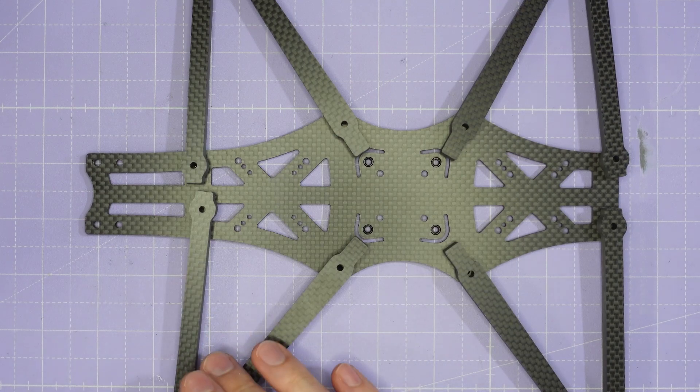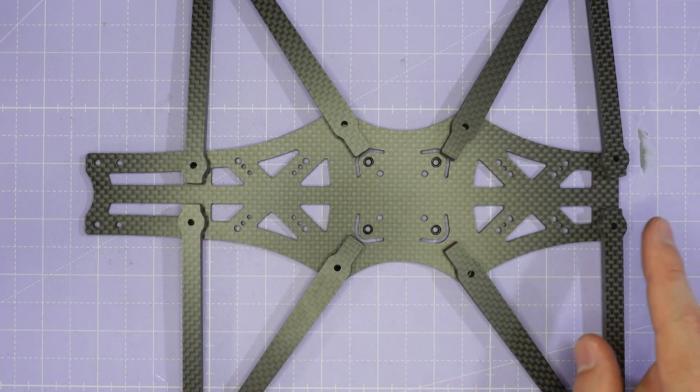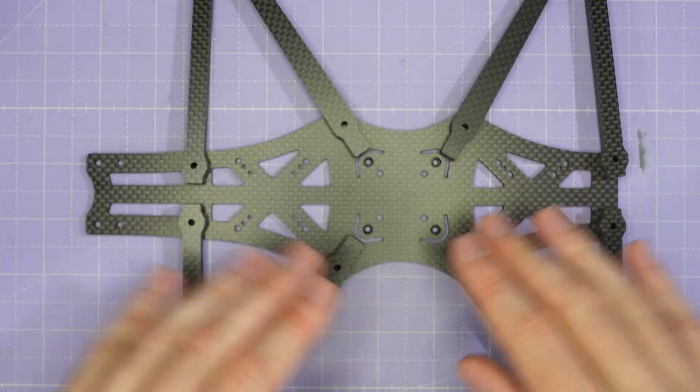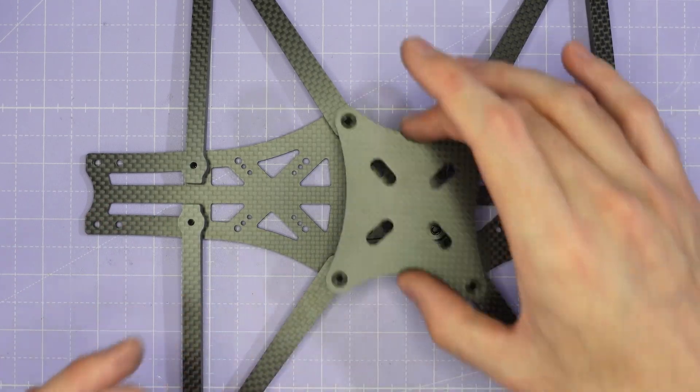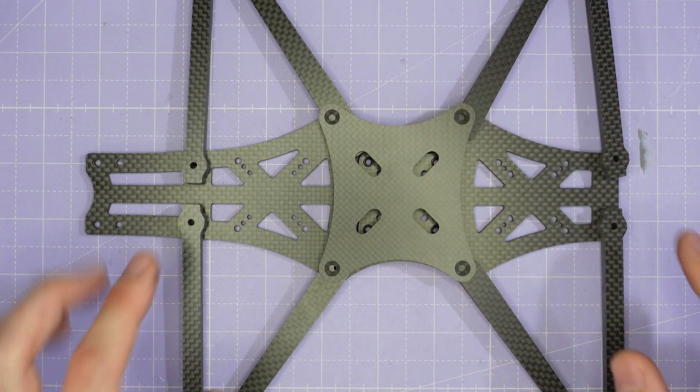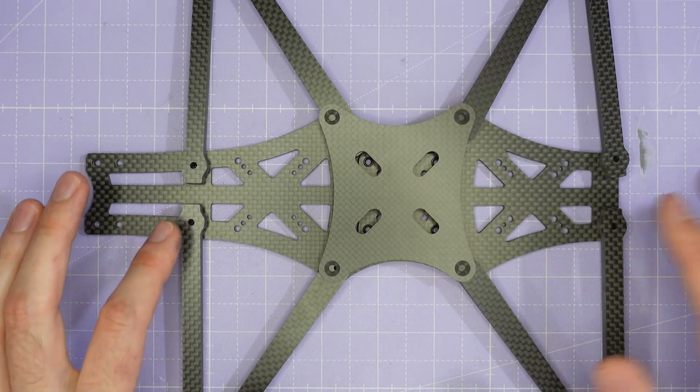Once you have all the arms correctly placed like this we can go ahead and put the brace plates on top and then we're going to secure them with our screws. So the center brace goes in the middle and then you'll have two braces for the front and the rear of the frame.